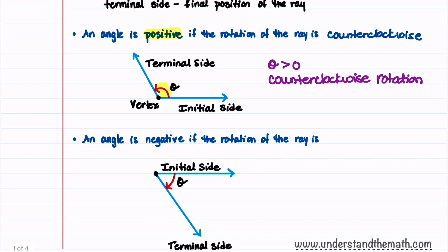Likewise, we can say that an angle is negative if the rotation of the ray is clockwise. And that's shown in this picture right here. This angle, theta, is less than zero, and we'll label this clockwise rotation.